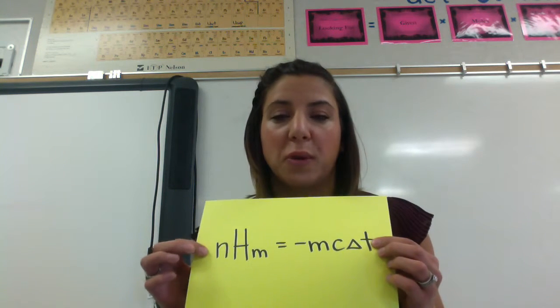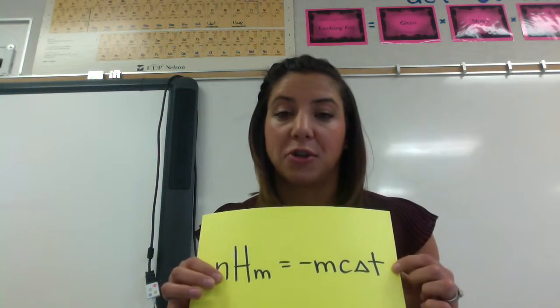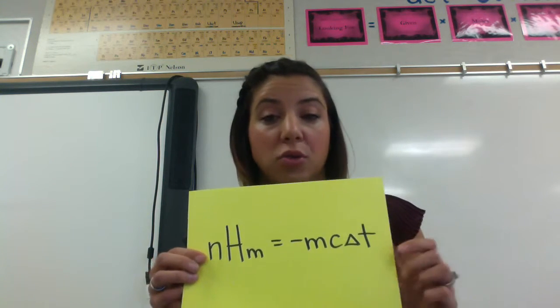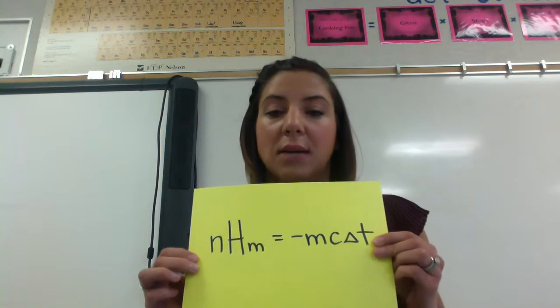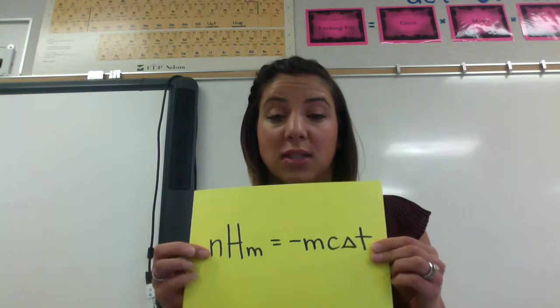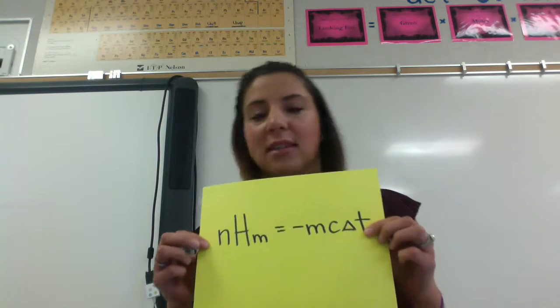These are both in kilojoules on both sides. So we have moles multiplied by the molar enthalpy, which is in kilojoules per mole. And then we have mass, heat capacity, and temperature change, which ends up being kilojoules. You need to make sure that they're the same on both sides. So sometimes a common mistake is kilojoules on one side and joules on the other. You need to make sure that your units are cancelling out on both sides.